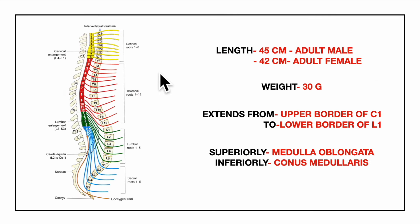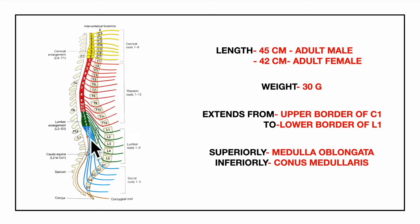Looking at the features of the spinal cord, it is 18 inches or 45 cm in an adult male and 42 cm in an adult female. The weight of the spinal cord is 30 grams. It extends from the upper border of the C1 vertebra, also known as the atlas vertebra, to the lower border of the first lumbar vertebra. Superiorly, the spinal cord is continuous with the medulla oblongata, and inferiorly it terminates as the conus medullaris.